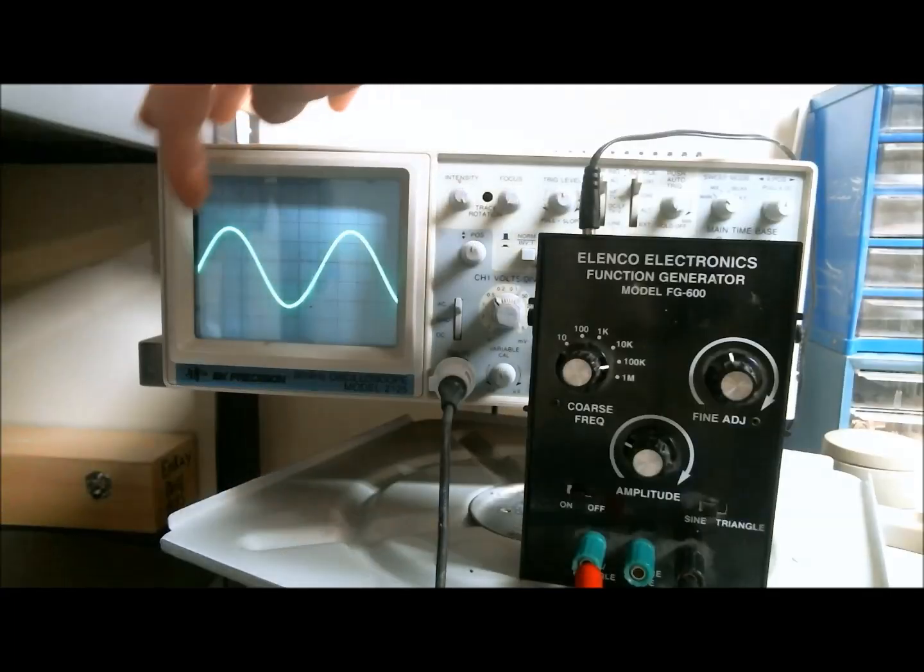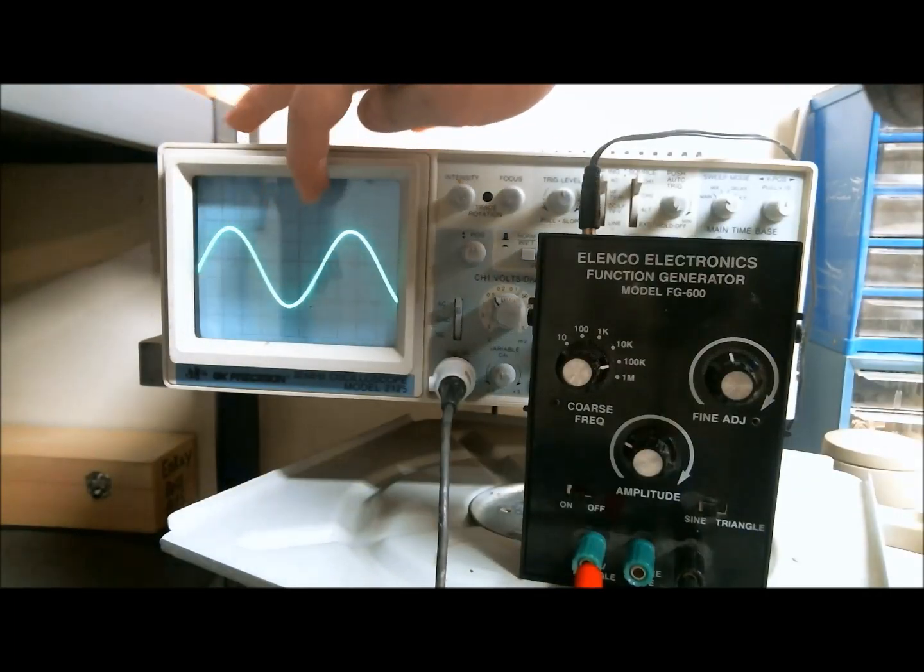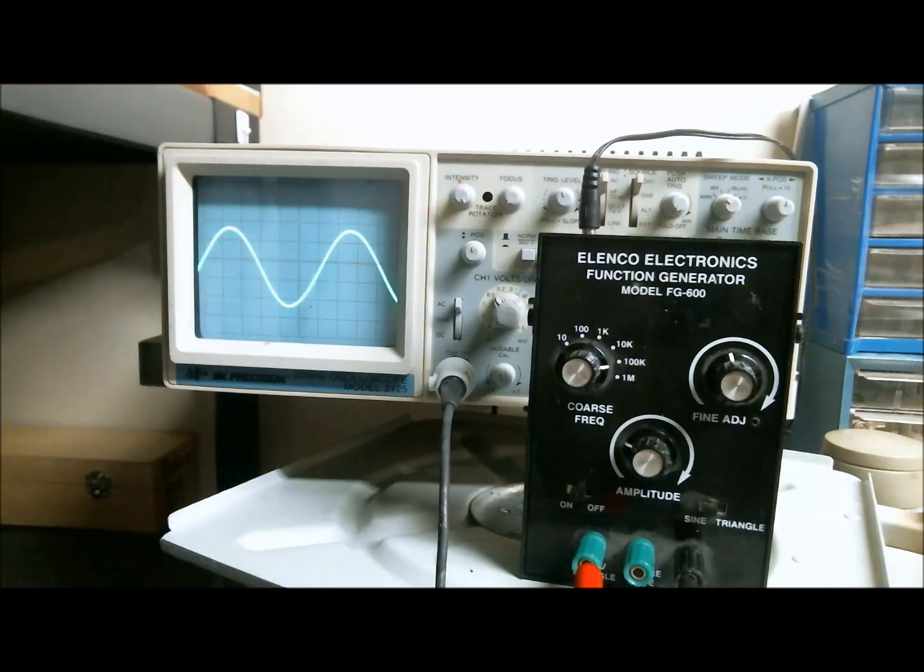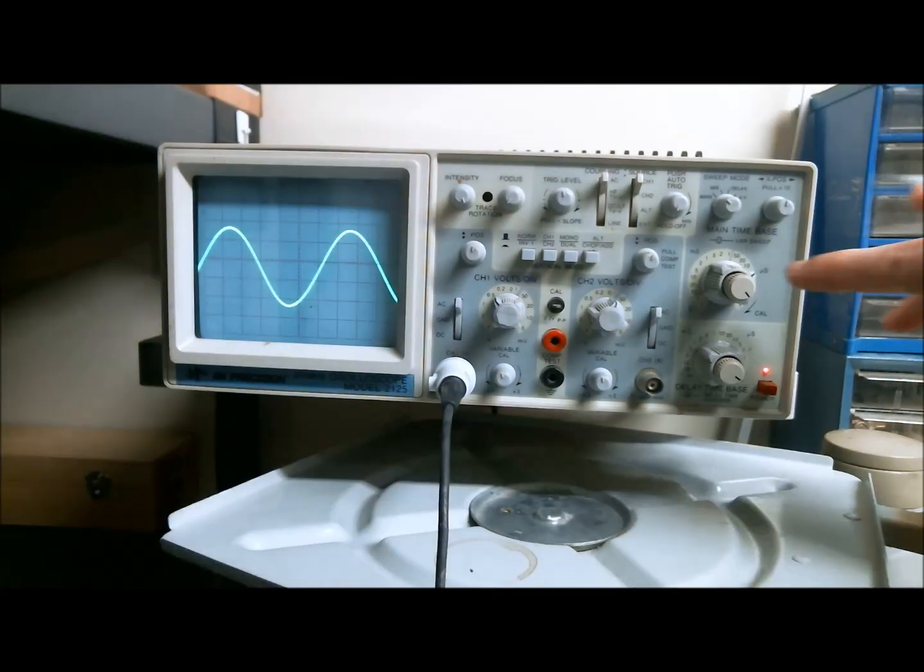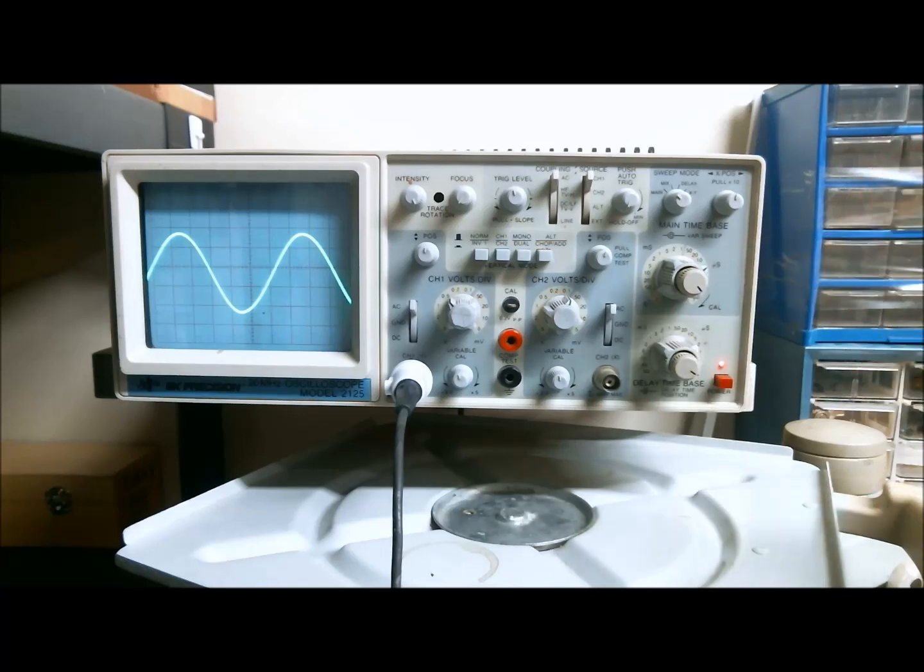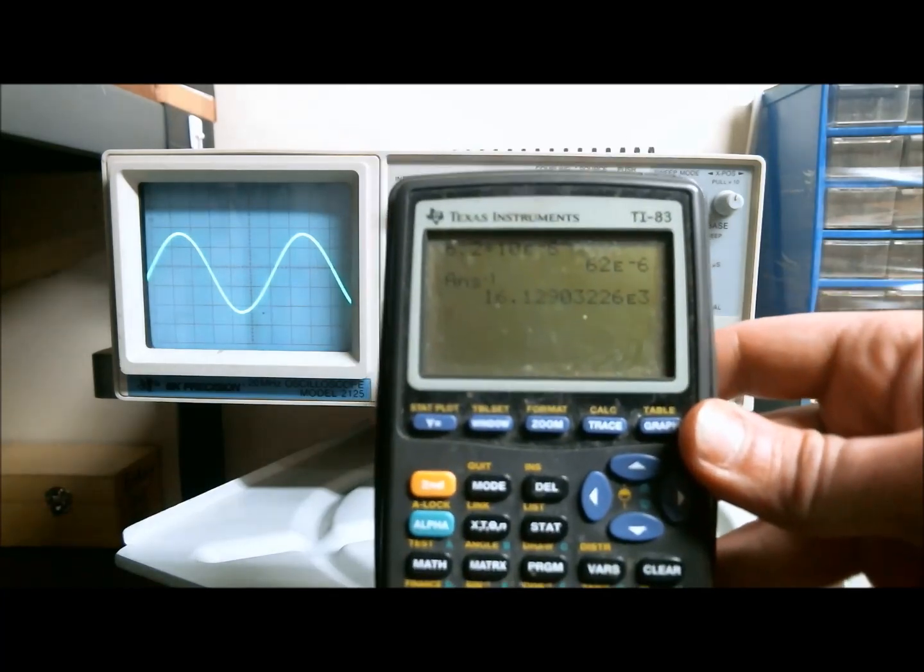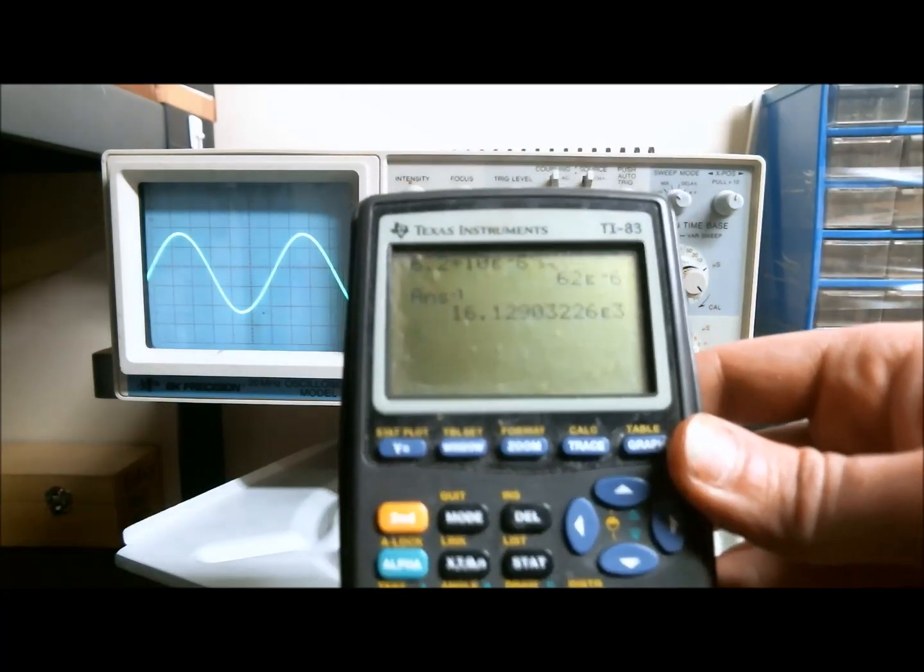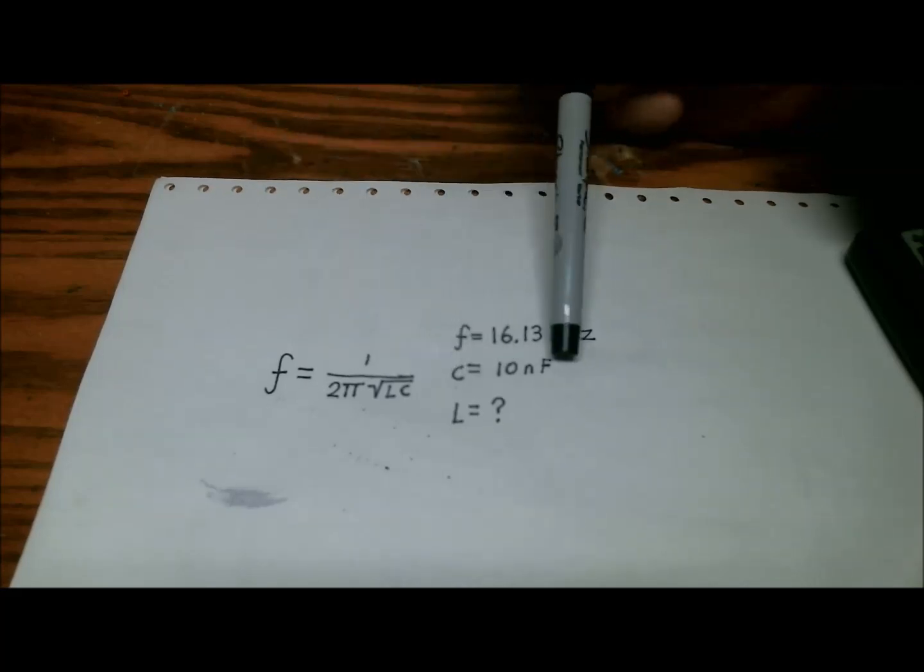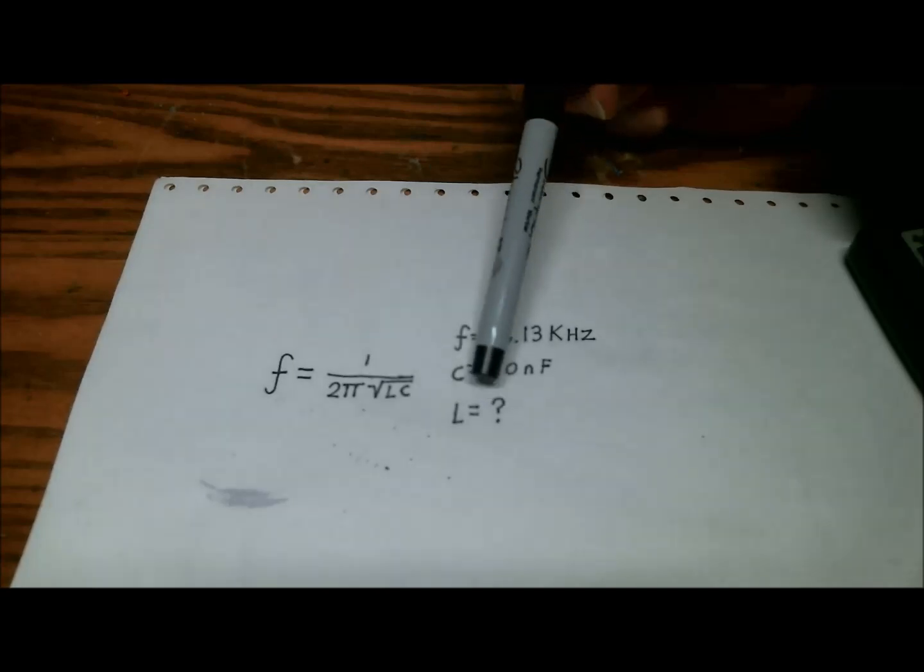So we have right around 6.2 divisions, and we are at 10 microseconds per division. So then we would just multiply the number of divisions by the time base, which is 10 microseconds, so that's 62 microseconds. Now you would reciprocate that and you would get your frequency, which is 16.13 kilohertz. So we have found the frequency and we know C because it's labeled on the component, and now we just need to solve for L.